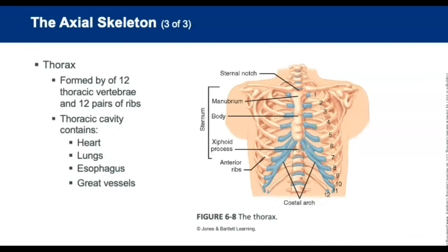The thorax is formed by the 12 thoracic vertebrae and their 12 ribs. The thoracic cavity contains very important structures: the heart, lungs, esophagus, and great vessels. The midline of the chest is the sternum, which is made up of the manubrium, body, and xiphoid process.